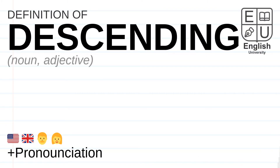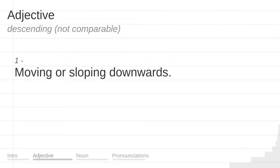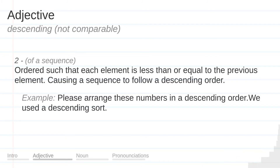Definition of the word: Descending. Adjective. Moving or sloping downwards. Ordered such that each element is less than or equal to the previous element. Causing a sequence to follow a descending order.